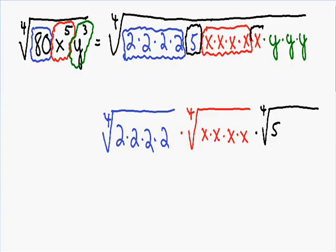Notice how we also have an x that's left over on the inside, so we need to put an x on the inside of the radical. And notice how we have three y's that are left over on the inside, so we also need to put three y's on the inside of our radical.